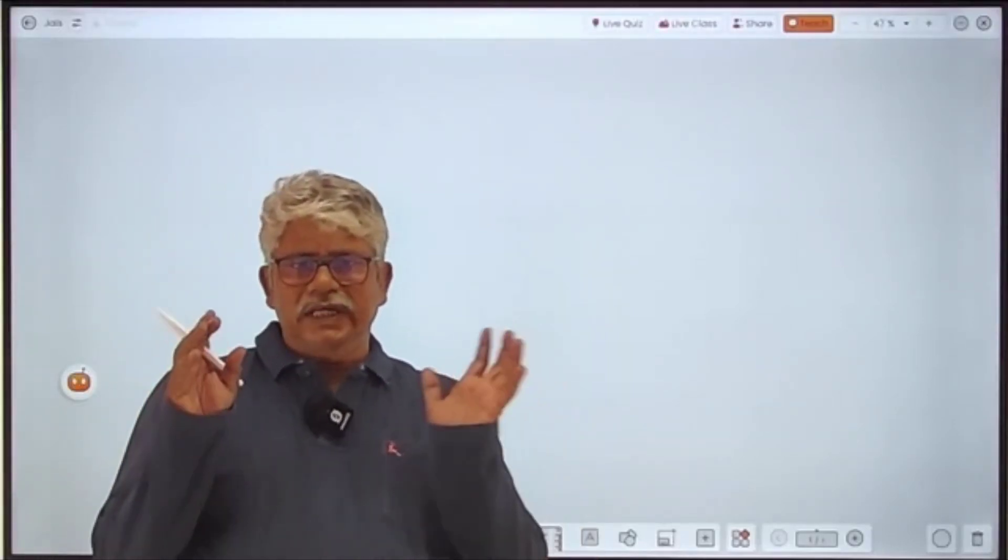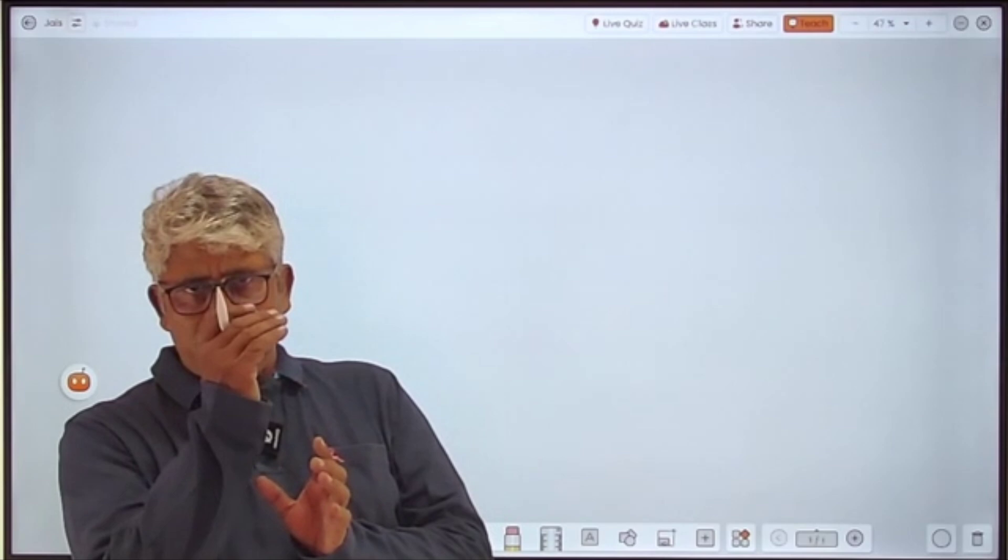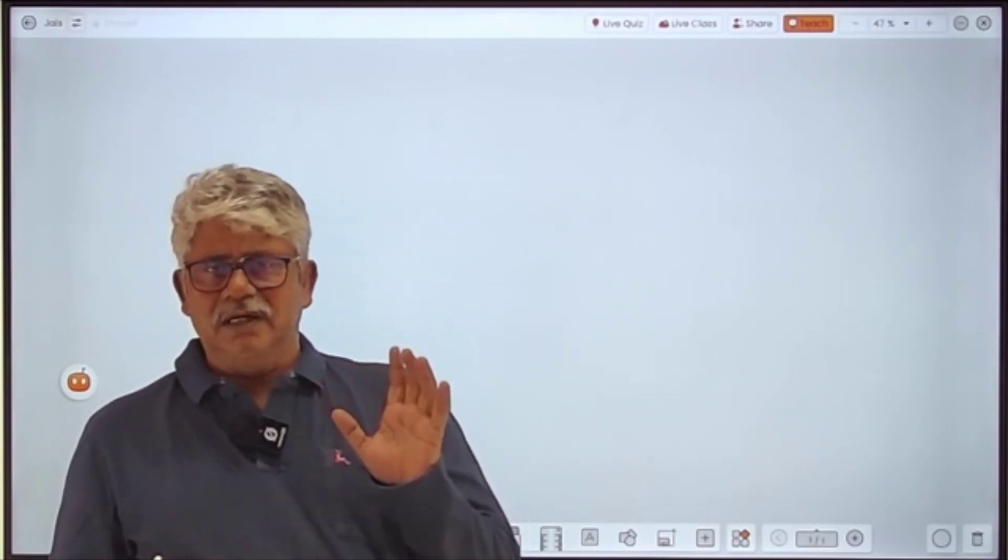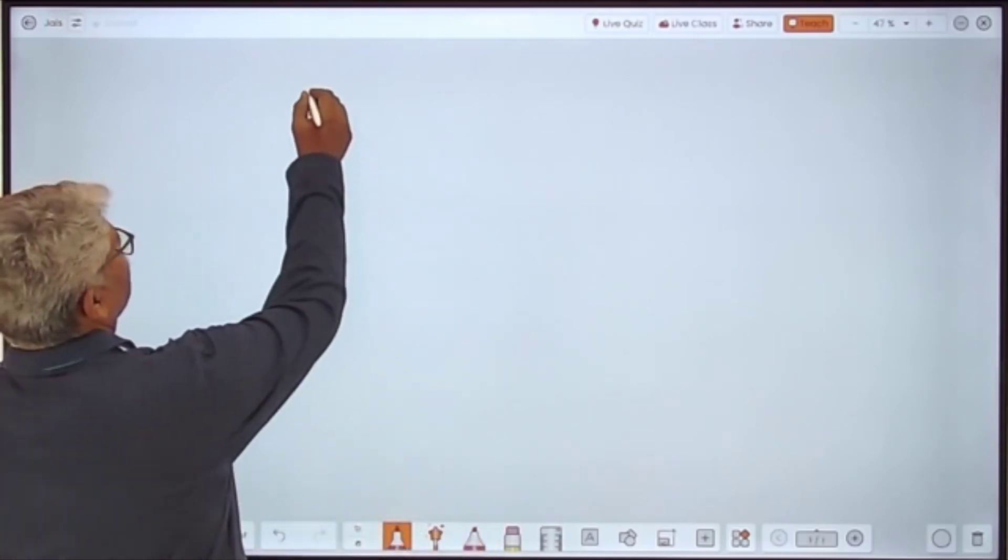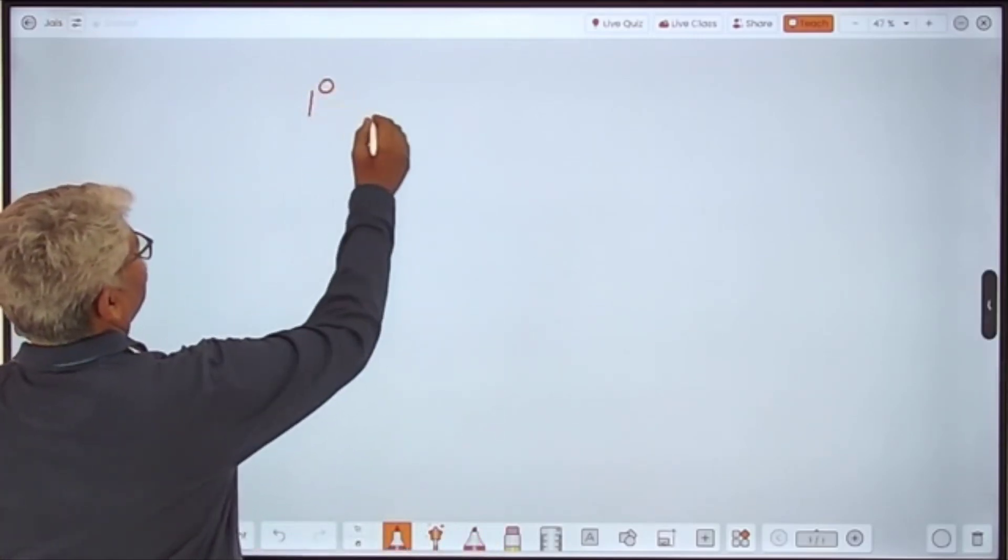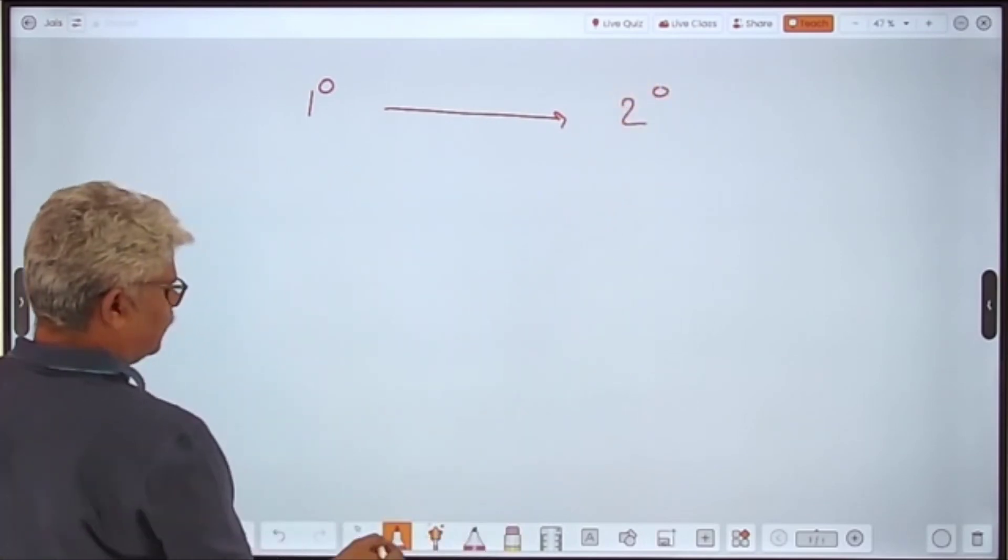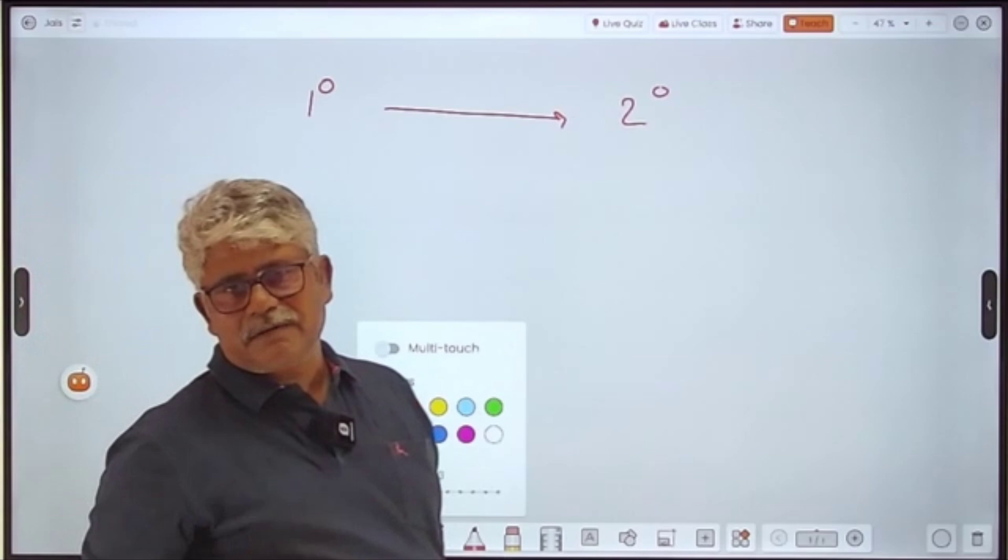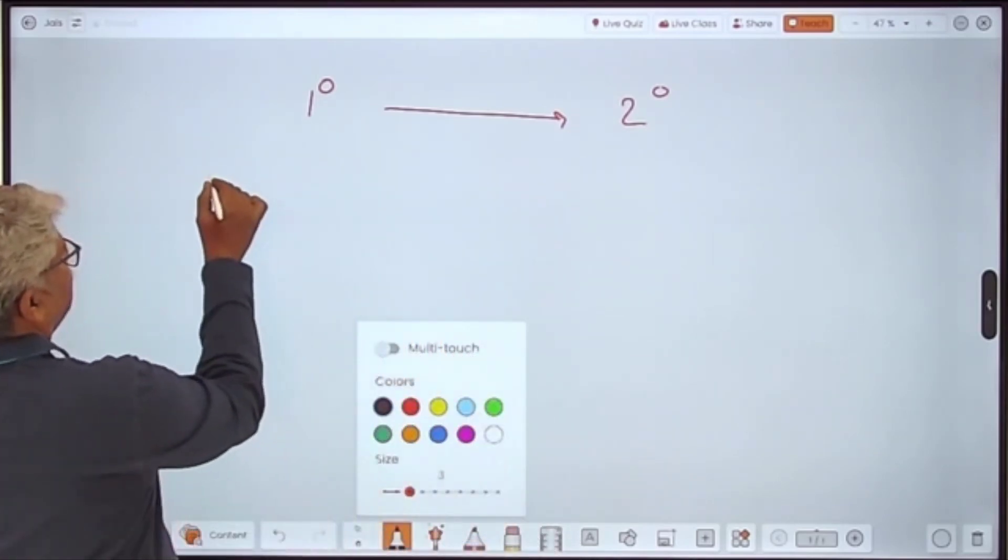Now today's topic is very interesting: converting primary carbon to secondary carbon. It is very easy and very interesting also. Let us take an example, one degree to two degree carbon. First of all, let us understand what is one degree carbon and what is two degree carbon. Carbon in which the functional group is attached.